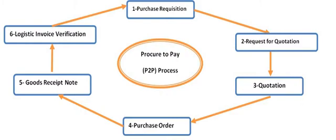The first stage of the P2P process is the Purchase Requisition. This is an internal document of a company — there is no connection of this document with third-party or external vendors. We need to create the purchase requisition for materials as well as services. There are many types: standard, subcontract, consignment, stock transfer, and external services purchase requisition.